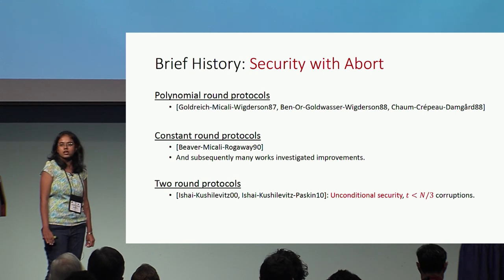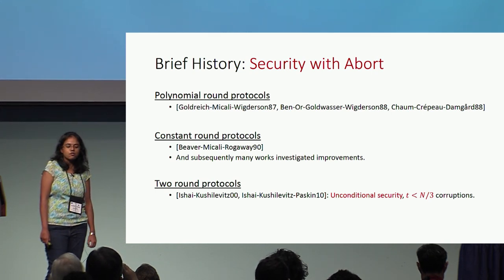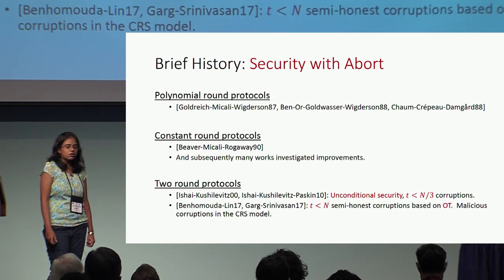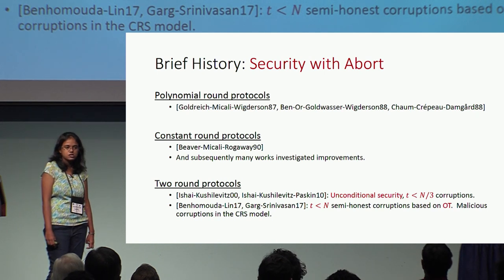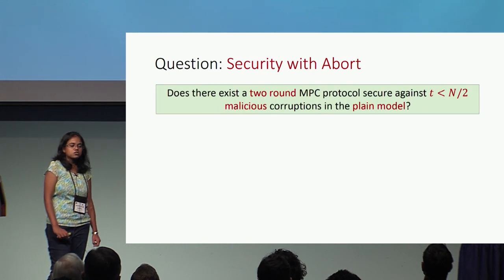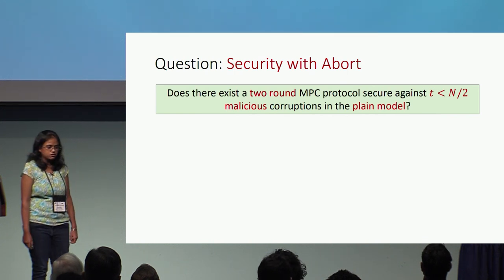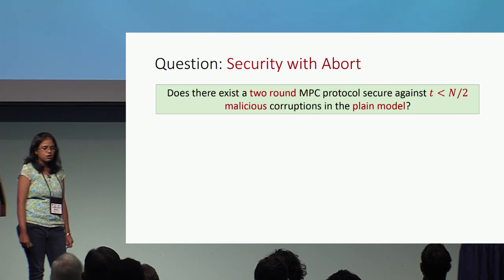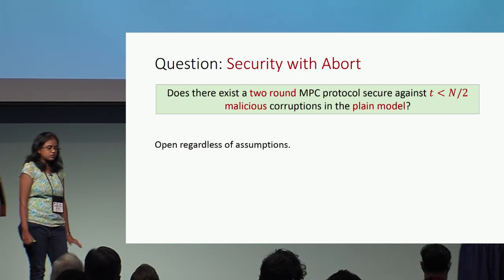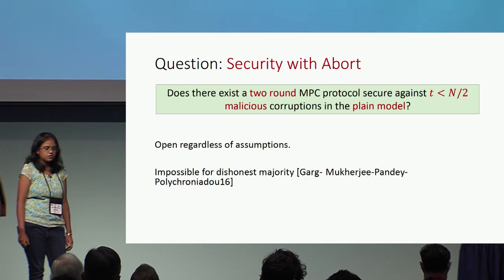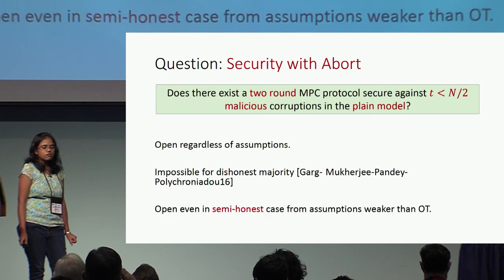In two-round protocols, Ishai et al. constructed a two-round unconditionally secure protocol for t less than n/3 corruptions. More recently, in Eurocrypt 2017, Benno Modalin and Garg Srinivasan constructed two-round dishonest majority protocols — their semi-honest protocols were based on OT and the malicious protocols were in the CRS model. Based on these results, we ask: does there exist a two-round MPC protocol in the Honest Majority setting for malicious corruptions in the plain model? This question was open regardless of assumptions, and we know two-round protocols in the dishonest majority setting are impossible. The question was also open in the semi-honest case if we seek assumptions weaker than OT.